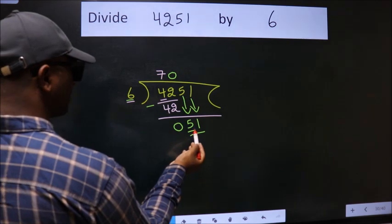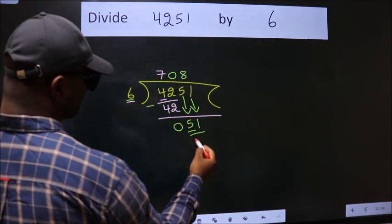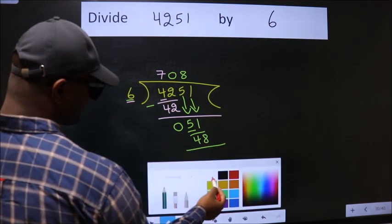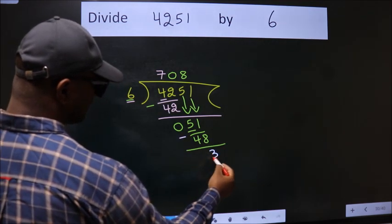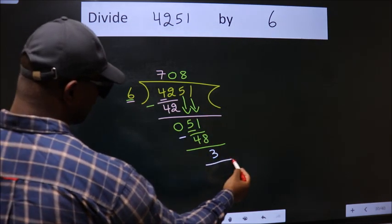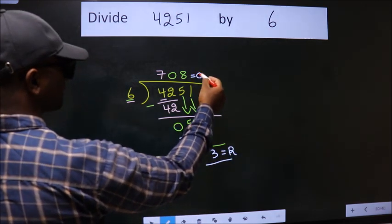A number close to 51 in 6 table is 6 8s, 48. Now, we subtract. We get 3. No more numbers to bring it down. So, we stop here. This is our remainder. This is our quotient.